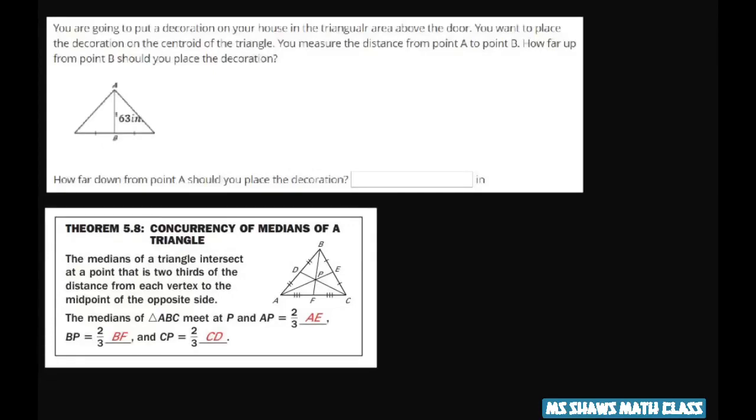Hi everyone, you're going to put a decoration on your house in the triangular area above the door. You want to place the decoration on the centroid of the triangle. You measure the distance from point A to point B. How far up from point B should you place the decoration?